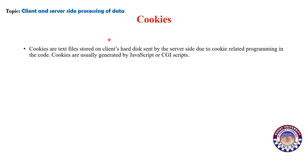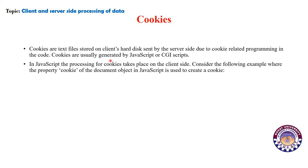Now we are moving on to cookies. Cookies are text files stored on the client's hard disk, sent by the server due to cookie-related programming in the code. Cookies are generally generated by JavaScript or CGI script. In JavaScript, the processing of cookies takes place on the client side. The document.cookie property of the document object in JavaScript is used to create a cookie.